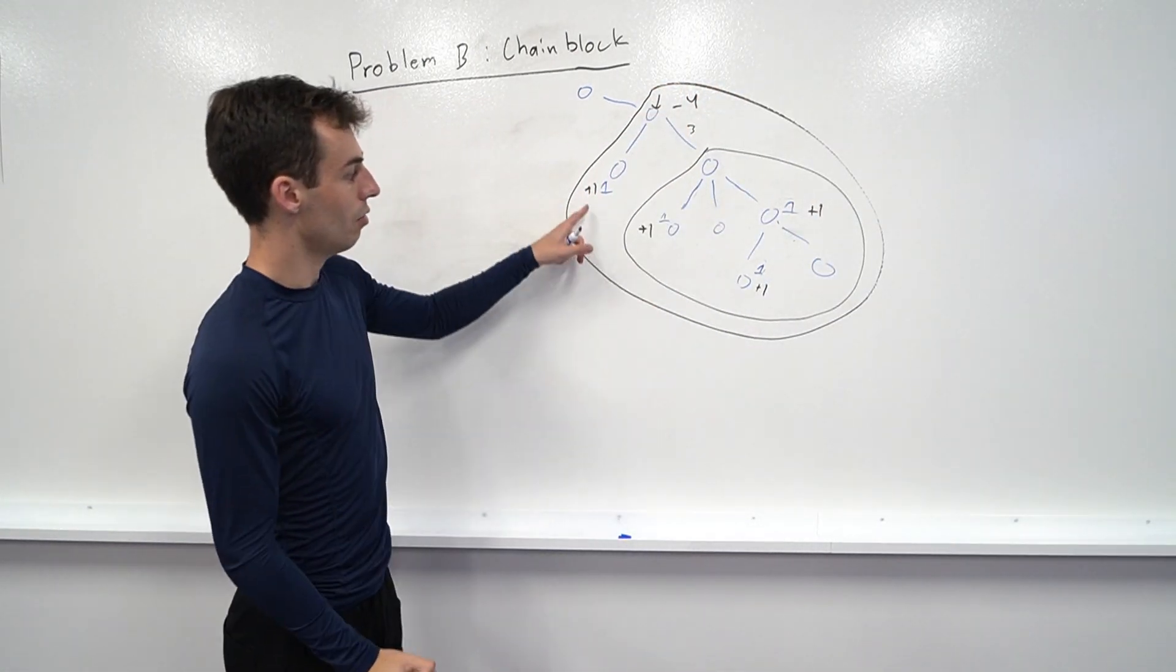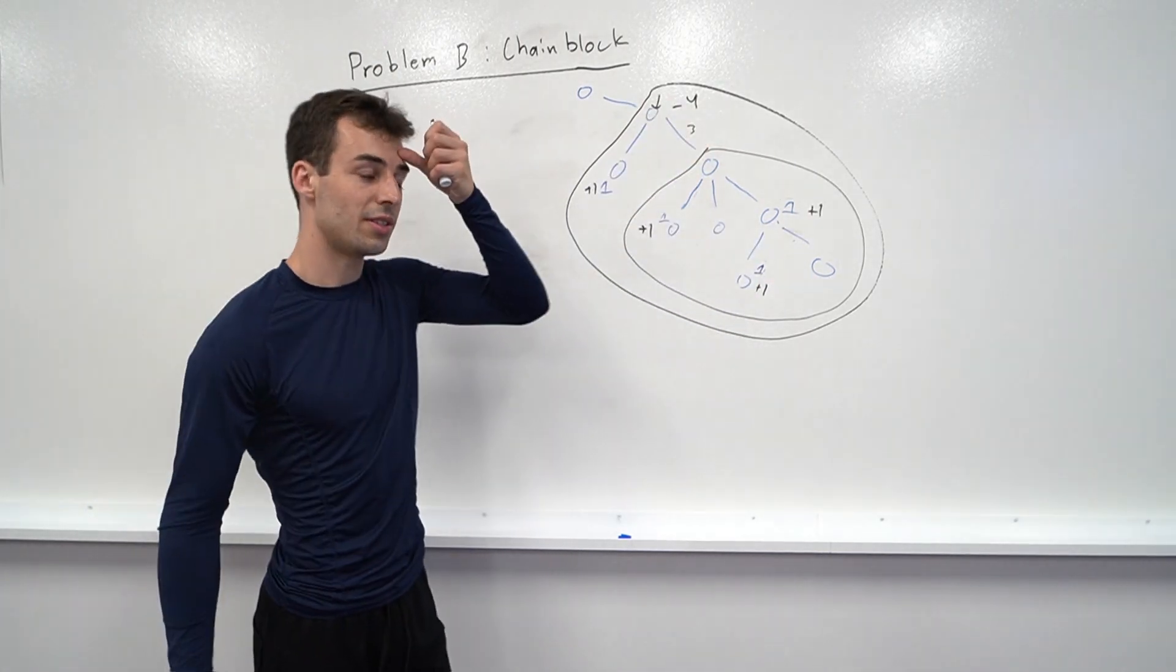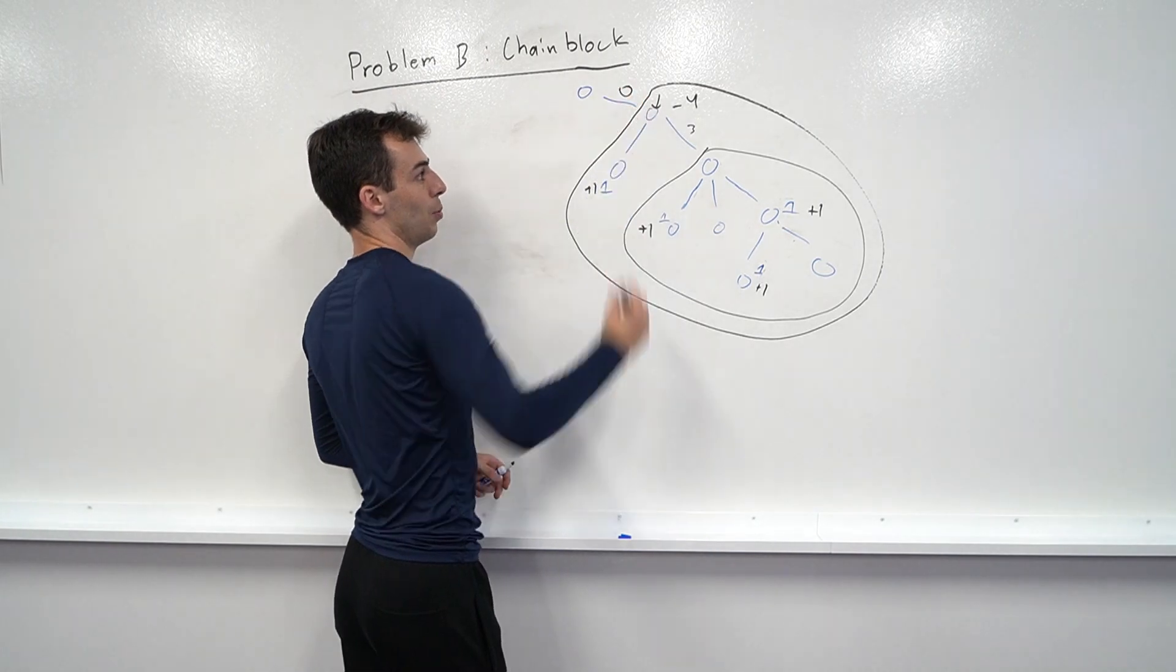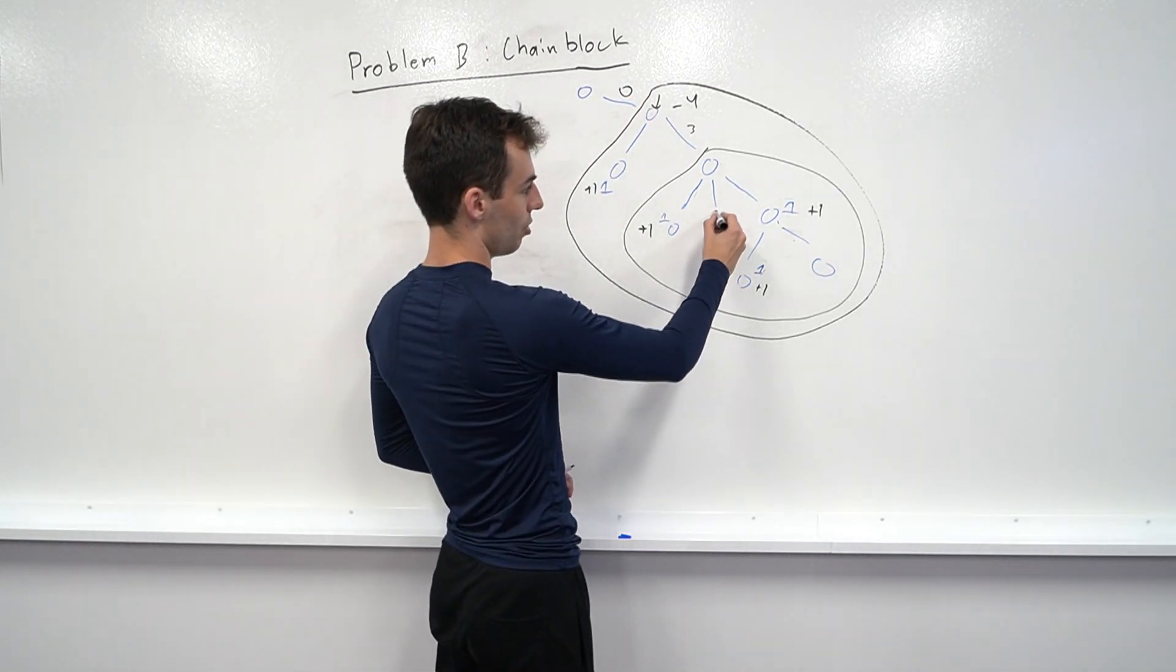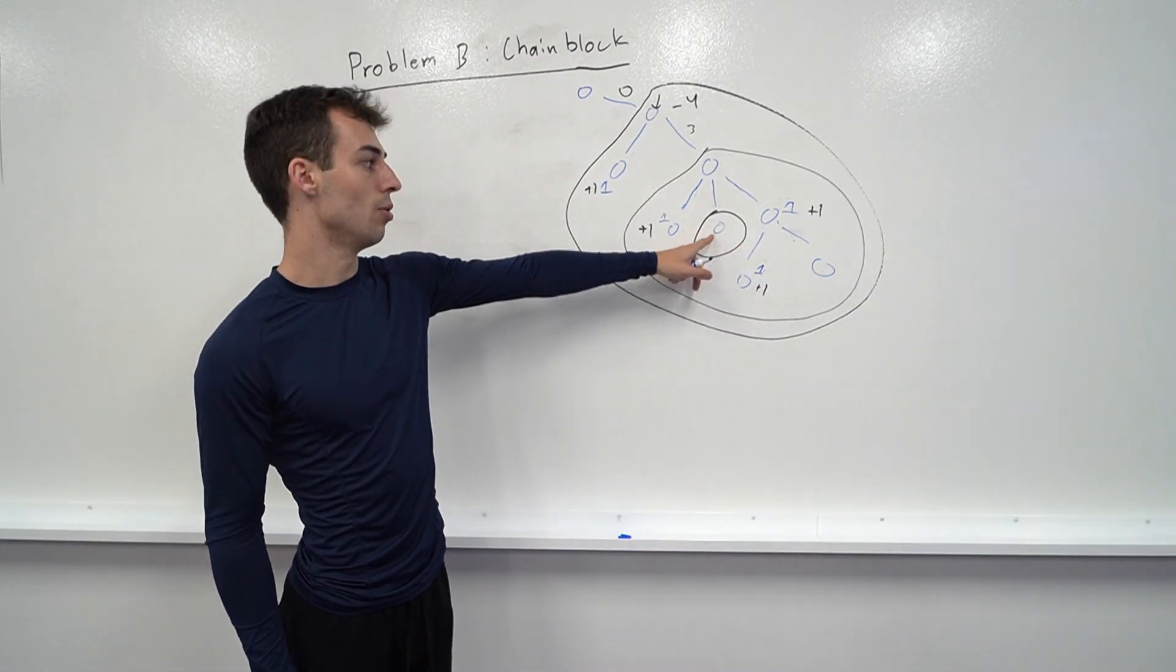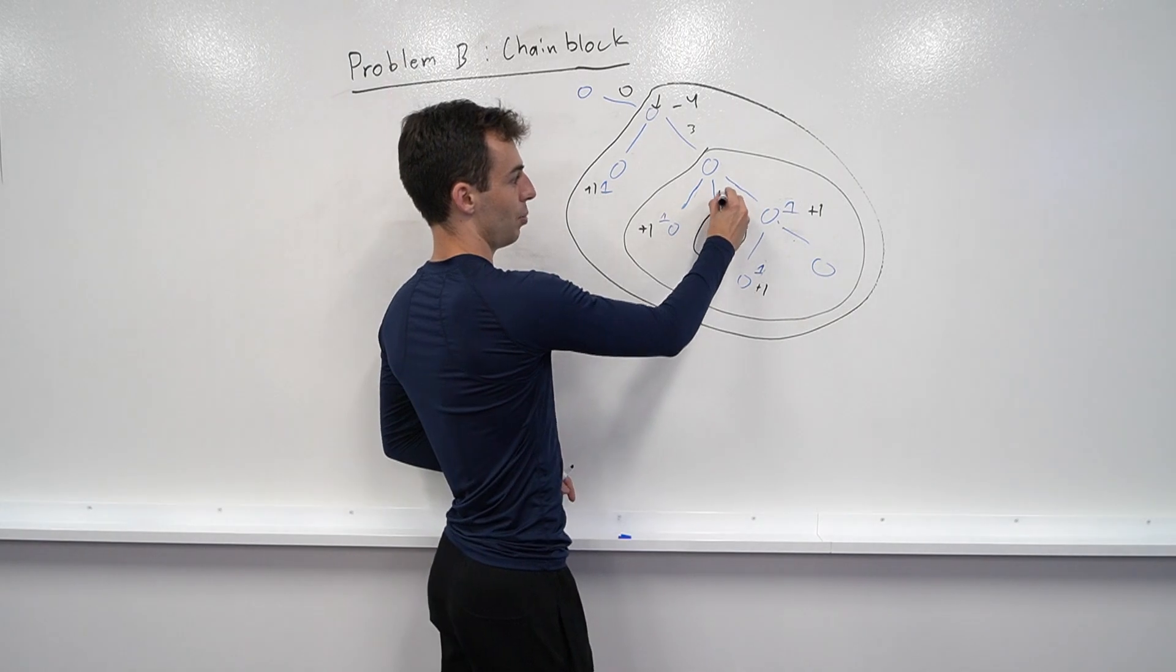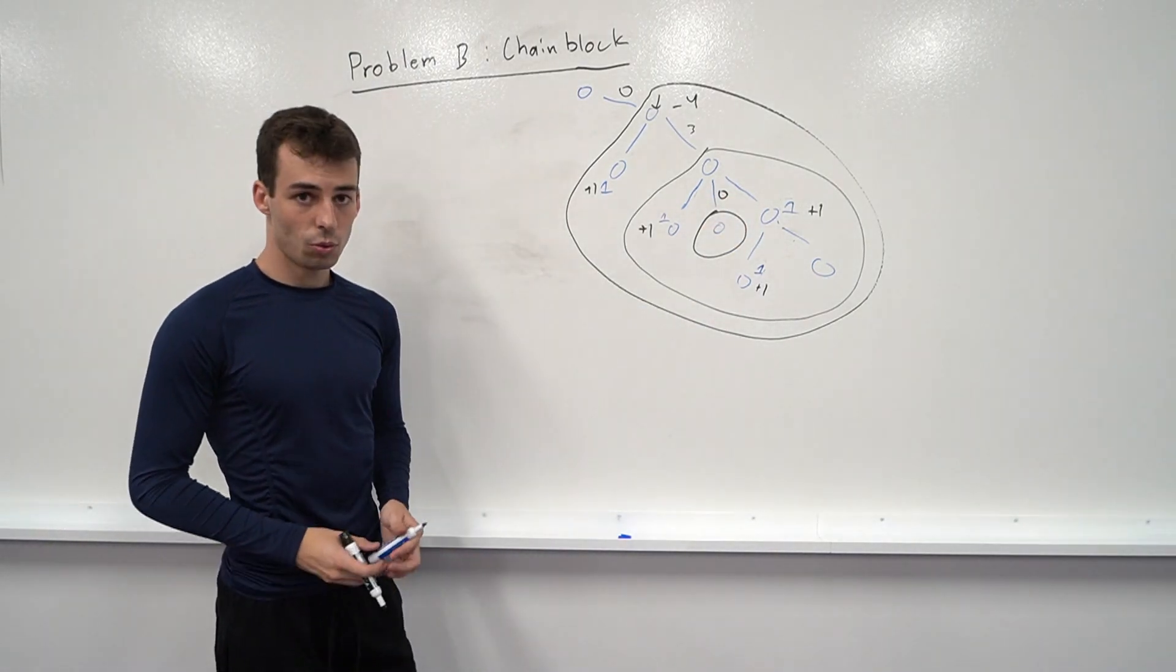Now let's consider this subtree here. This has a sum of one plus two plus three plus four minus four. So this has a sum of zero, which means this edge is protected zero times. And then finally, we'll do one more example, which is this subtree here. Obviously, this has a sum of zero plus zero. So this edge right here is also protected zero times.